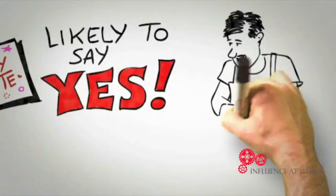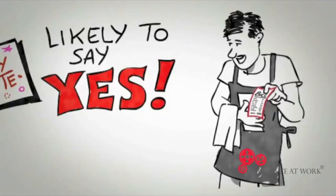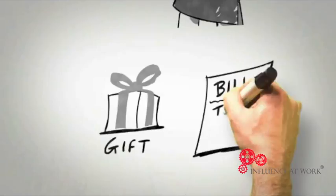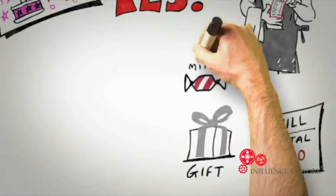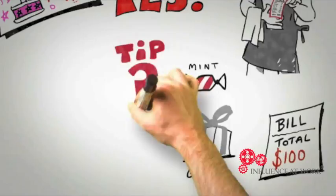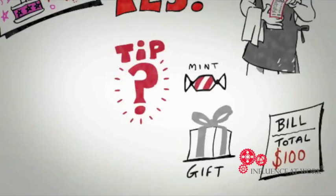One of the best demonstrations of the principle of reciprocation comes from a series of studies conducted in restaurants. The last time you visited a restaurant, there's a good chance that the waiter or waitress will have given you a gift, probably at about the same time they bring your bill—a liqueur, perhaps, or a fortune cookie, or perhaps a simple mint. So here's the question: Does the giving of a mint have any influence over how much tip you're going to leave them? Most people will say no, but that mint can make a surprising difference.